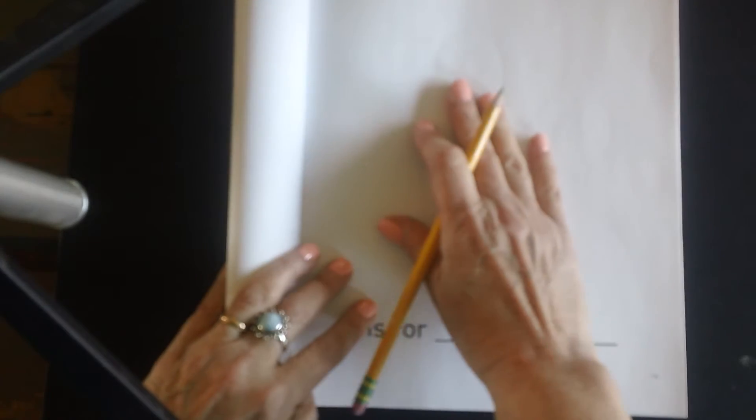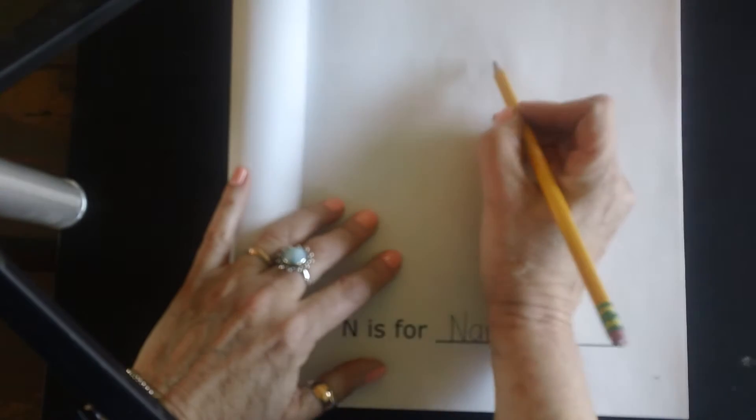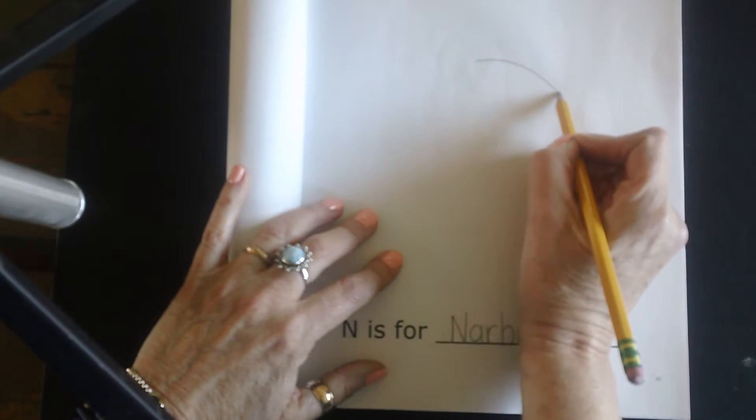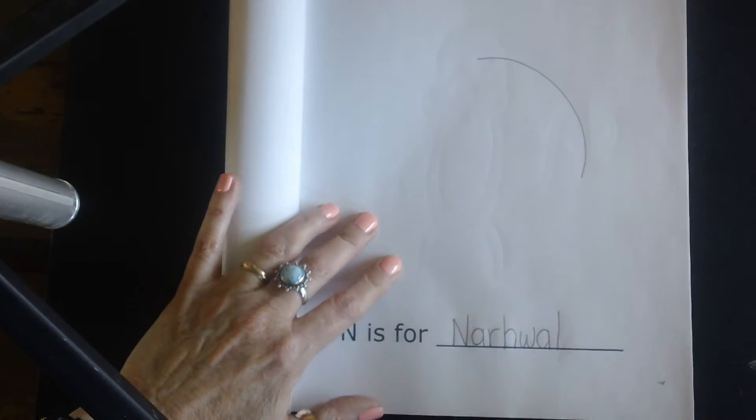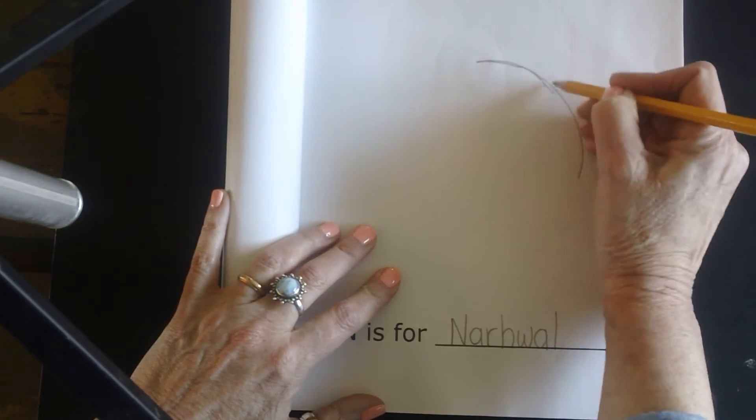So the first thing we're going to do, we're going to start in the middle of our page and start with a line that curves kind of like this. Okay, hopefully that's dark enough for you to see. I'm just going over it.